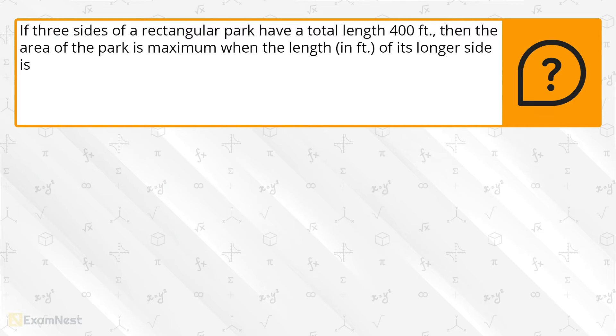If three sides of a rectangular park have a total length 400 feet, then the area of the park is maximum when the length in feet of its longer side is, and the options are given.